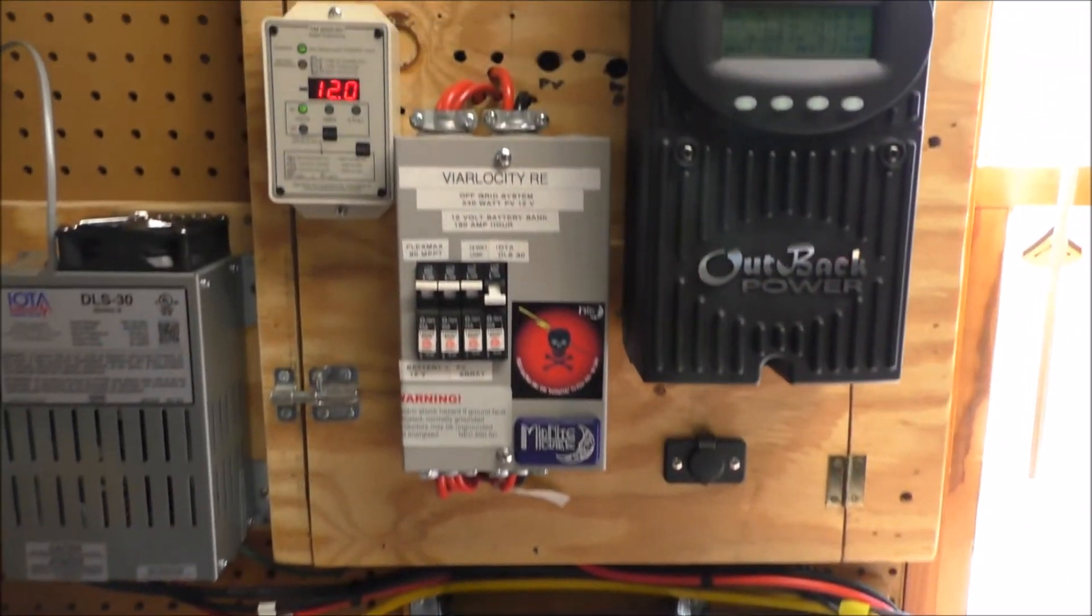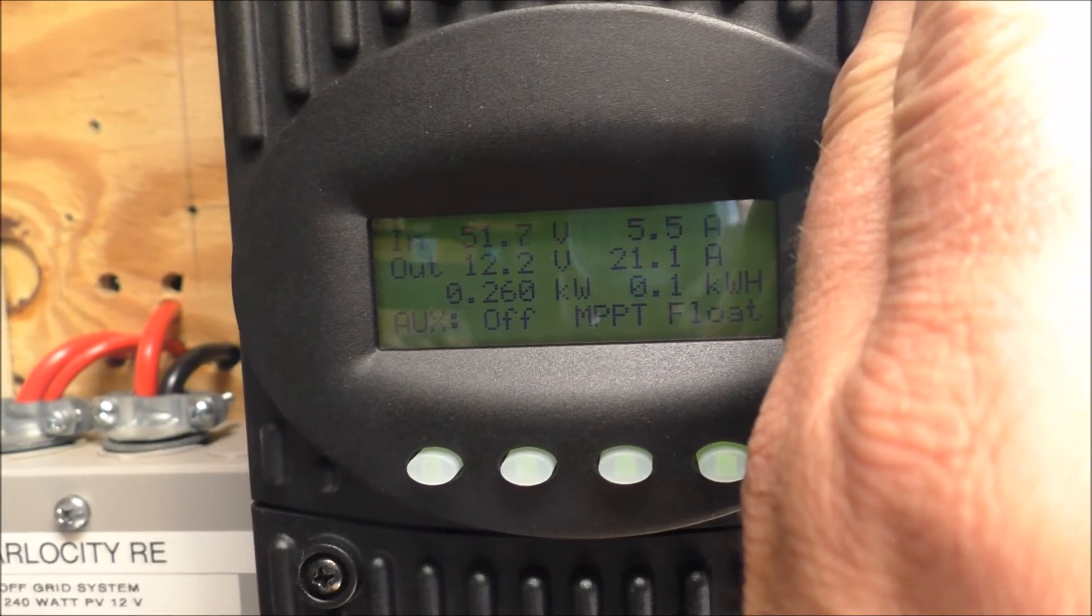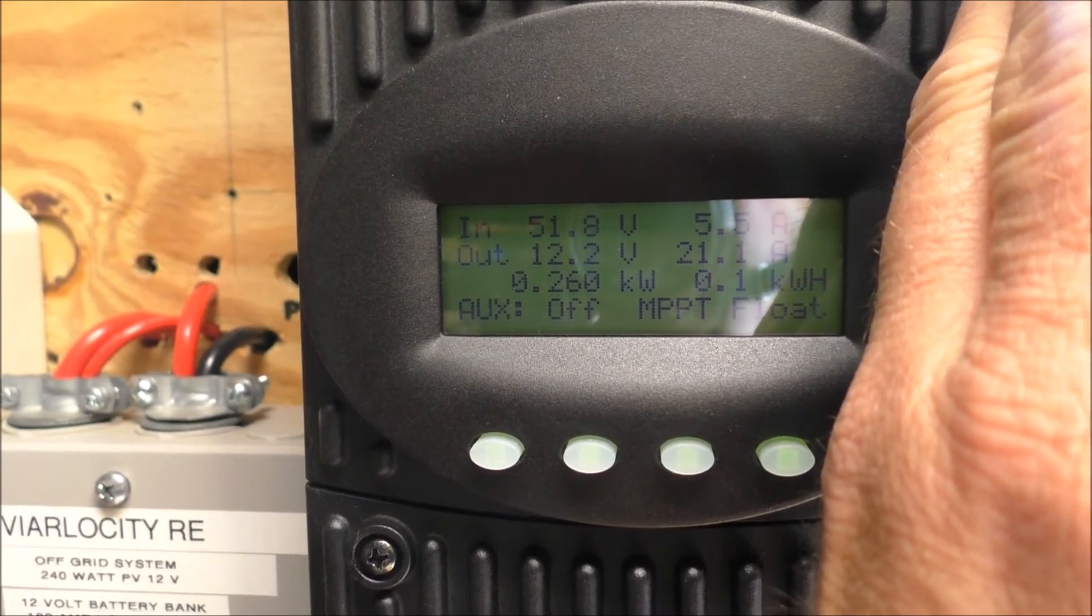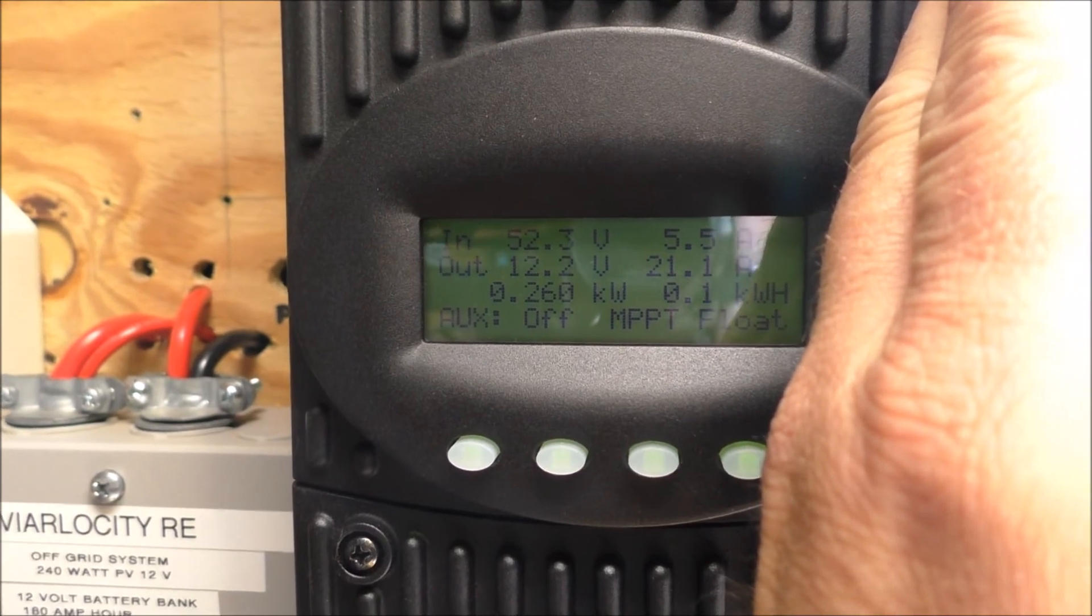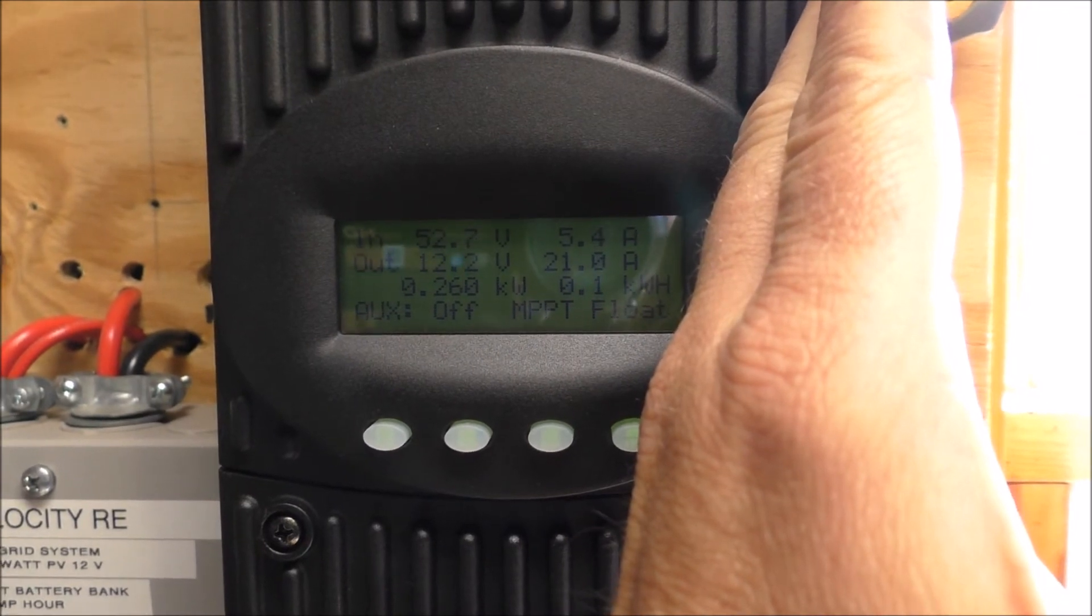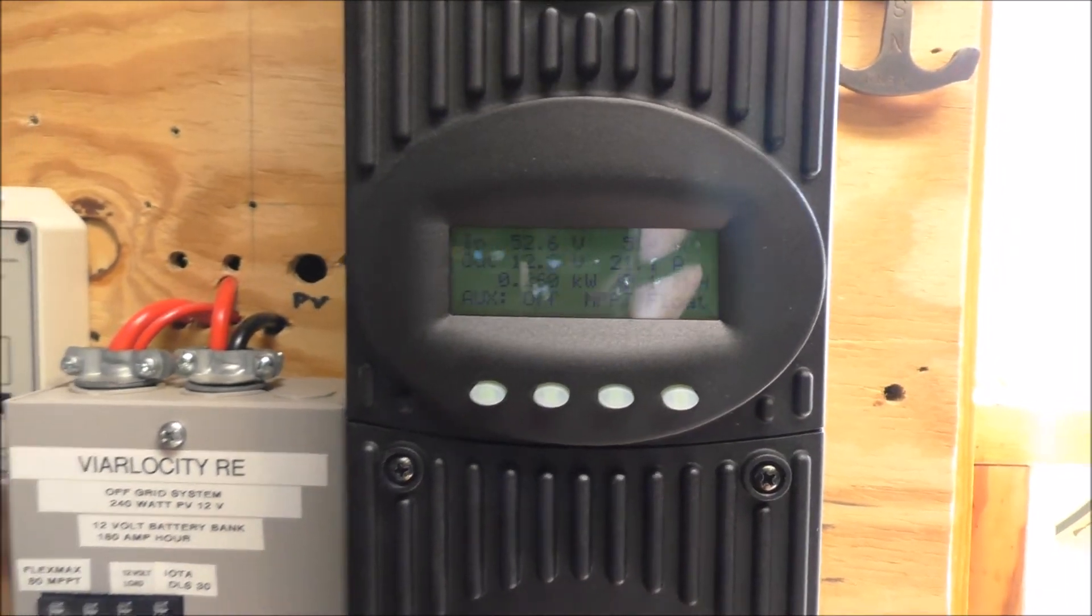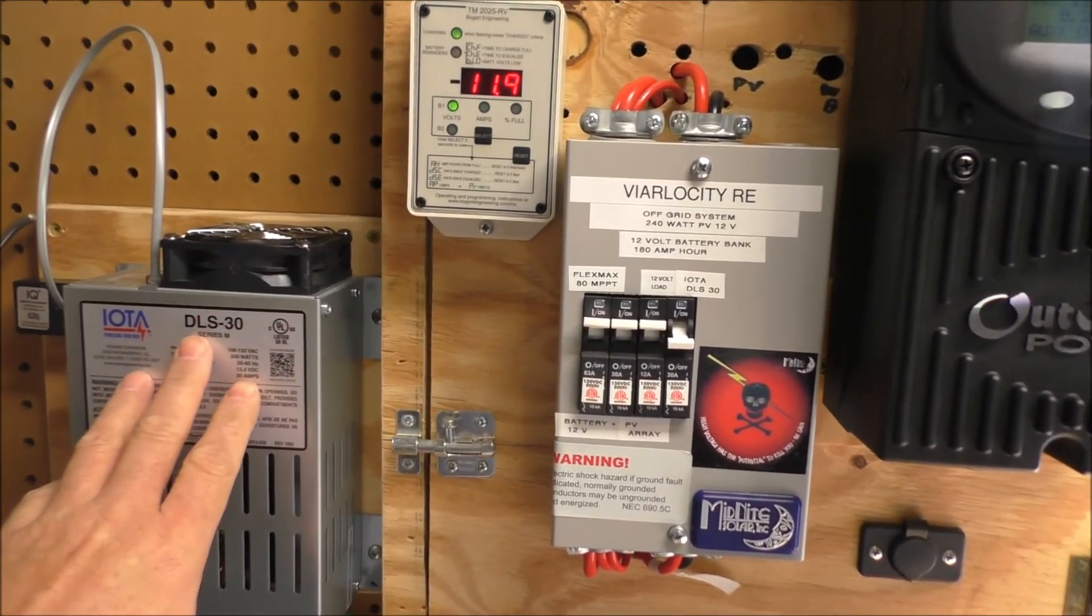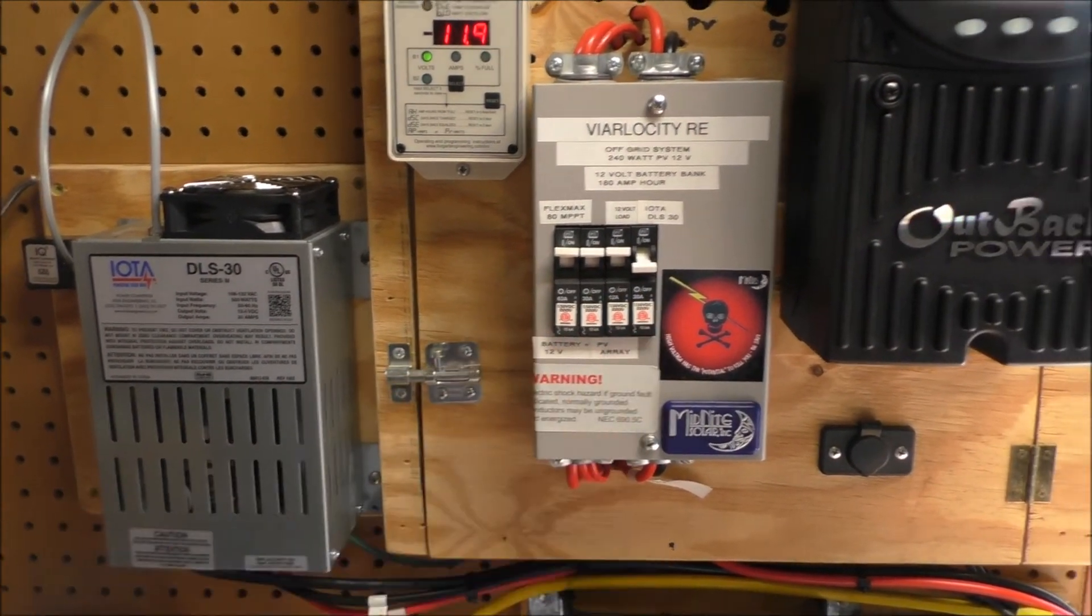We're at 12.2 volts, protect the glare. We're drawing in 51.8 volts, 12.2 volts. We're bringing in 260 watts of power, or 21.1 amps. Alright, so hey. And that's what - the Iota is off right now. The Iota charger is off right here.